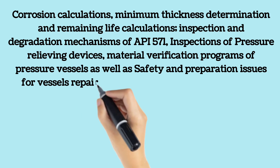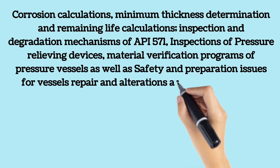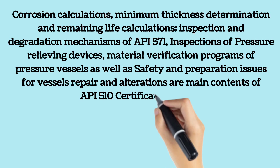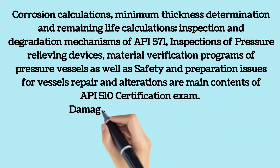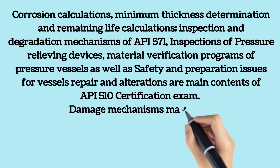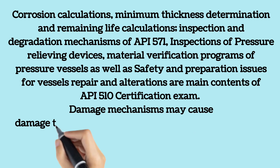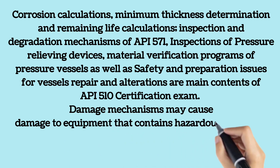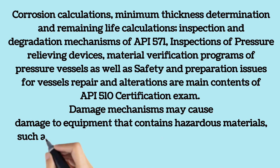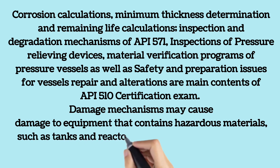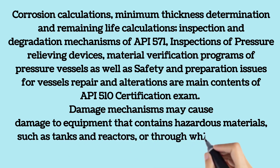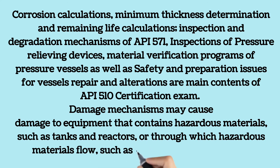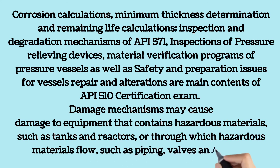Damage mechanisms may cause the failure of process equipment resulting in loss of containment or impaired operability. They may cause damage to equipment that contains hazardous materials, such as tanks and reactors, or through which hazardous materials flow, such as piping, valves, and pumps. Damage mechanisms may also affect equipment in utilities and support systems whose failure may result in a process safety incident.